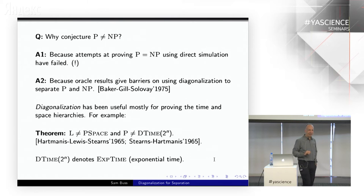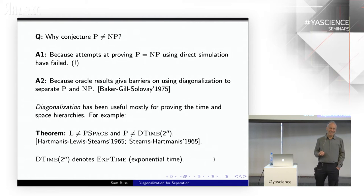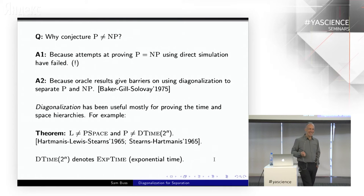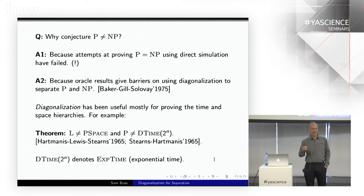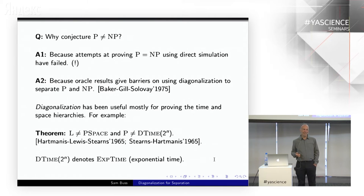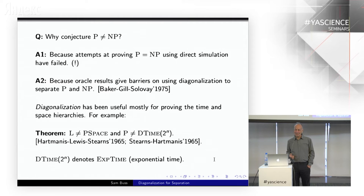So let's start from the beginning. Why do we conjecture P not equal NP? One reason is because people have attempted to prove P equal NP and failed — though of course people have also attempted to prove P not equal NP and failed. Another reason is that oracle results give barriers on using diagonalization to separate P and NP. There are also analogies to recursive versus recursively enumerable; these classes are different, and P and NP are viewed as an analog of those questions.